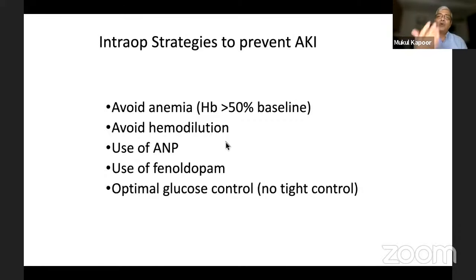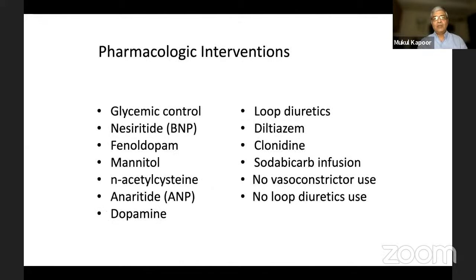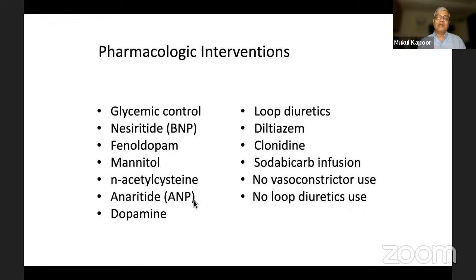Perioperative strategies to prevent AKI include: optimize cardiac output, avoid volume depletion, optimize renal function in patients with reversible AKI, use statins, hematocrit optimization (a low hematocrit may cause or aggravate AKI), and surgery should preferably not be done within five days after angiography. Intraoperative strategies: avoid anemia, keep hemoglobin at least more than 50% of baseline, avoid hemodilution, use atrial natriuretic peptide when indicated, use fenoldopam, and optimize glucose levels. Most pharmacological interventions recommended over time — including diuretics, mannitol, dopamine, and N-acetylcysteine — do not work when used alone.